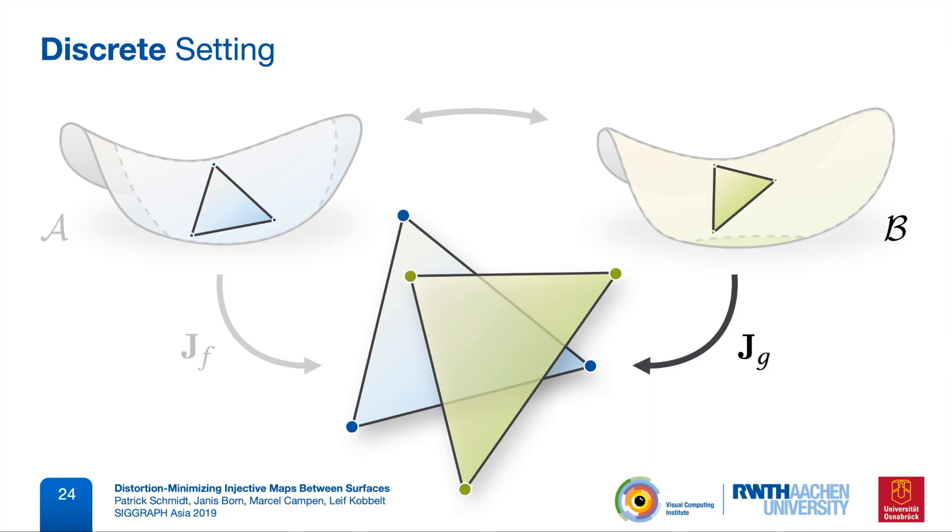The Jacobian we're actually interested in is the composition of the two. This quantity is also piecewise constant, but now with respect to the overlap of a triangle of A with a triangle of B. So we need to compute these overlay polygons, and that includes computing these straight line intersection points in the plane. So we do that, we compute these overlay polygons everywhere.